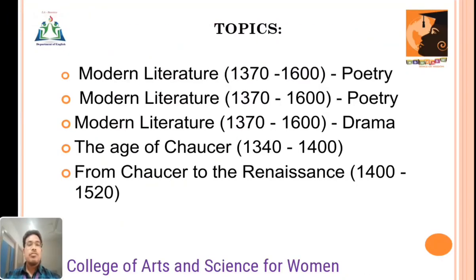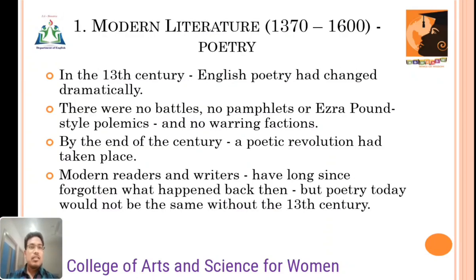Unit 1 consists of Modern Literature. It starts from 1370 to 1600 — Poetry; Modern Literature 1070 to 1600; and Modern Literature Drama and Age of Chaucer from 1340 to 1400; from the Age of Chaucer to Renaissance, 1400 to 1520. Modern Literature starts from 1370 to 1600, especially the poetry.